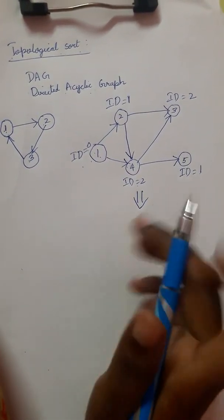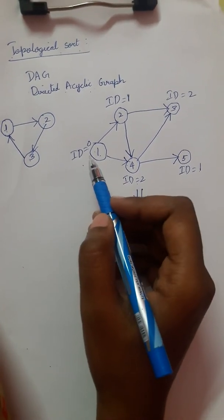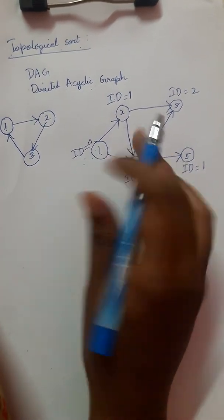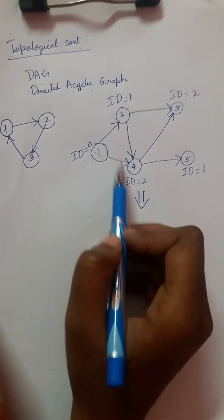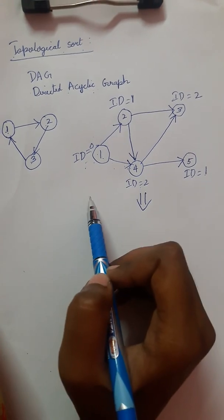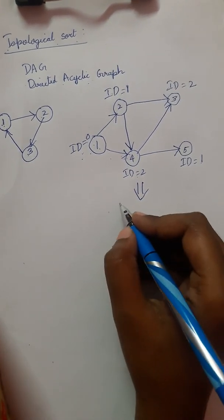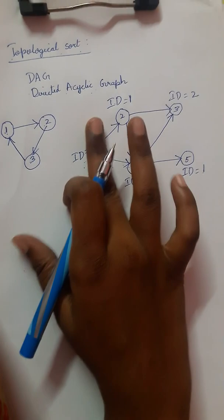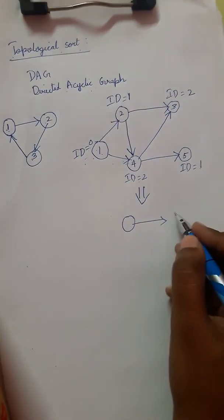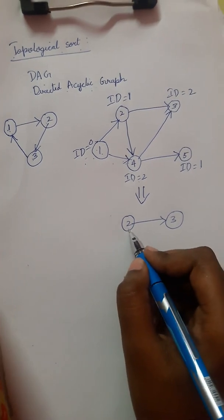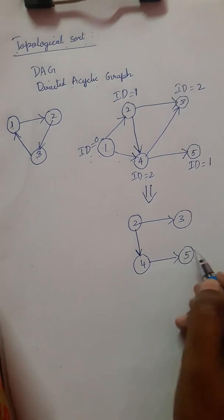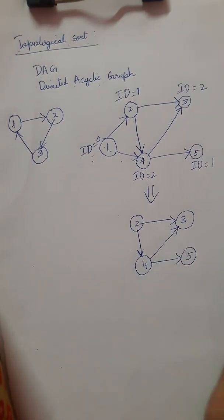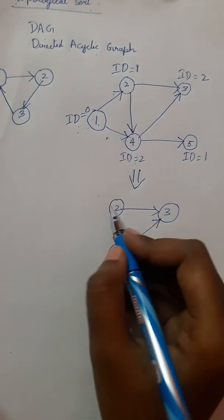When we eliminate node 1, the arrow marks from node 1 are removed. This changes the in-degrees of connected nodes. We redraw the diagram without node 1 and its edges, leaving nodes 2, 4, 5, and 3.